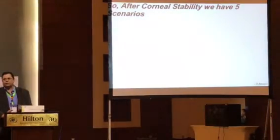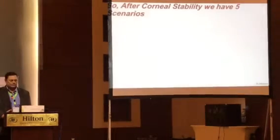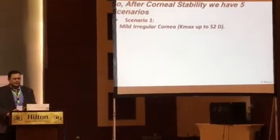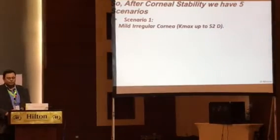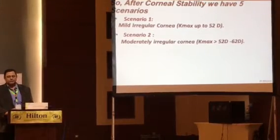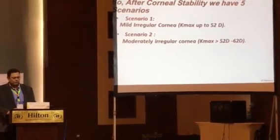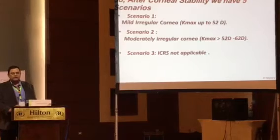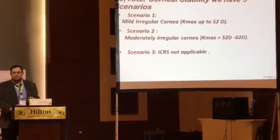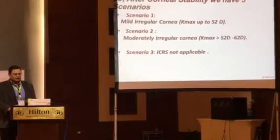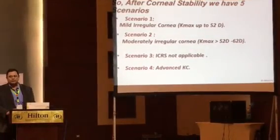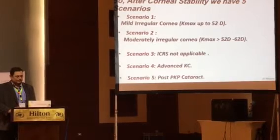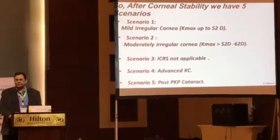To be more systematic, after corneal stability we have five scenarios. The first is a stable cornea with mild irregular cornea, Kmax up to 52 diopters. The second is moderately irregular cornea, Kmax up to 62 diopters. The third is when ICRs are not applicable. The fourth is advanced keratoconus. And the last scenario is post-PKP cataract.